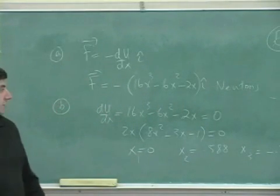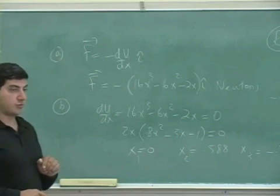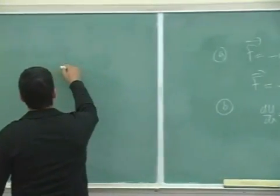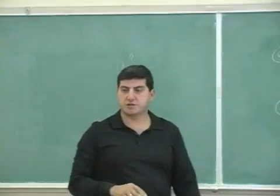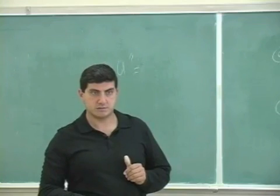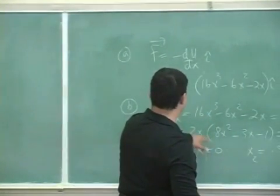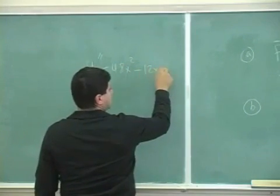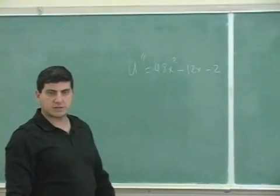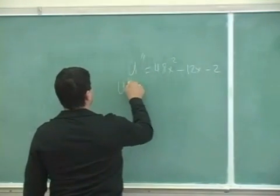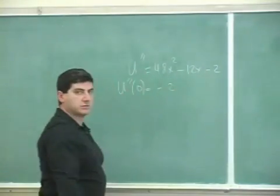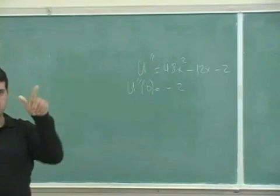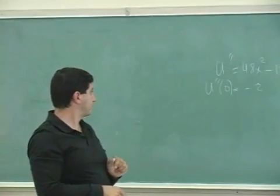So we have now determined the points of equilibrium. Now let's distinguish which one is stable and which one is unstable. We have to take the second derivative of U to apply the second derivative test. Taking the second derivative, we get 48x² - 12x - 2. Now put in x equals 0. U''(0) equals negative 2. According to the second derivative test, if the second derivative at a critical point is negative, then it's concave down, so that would be a local max, unstable.